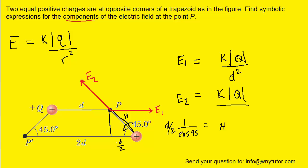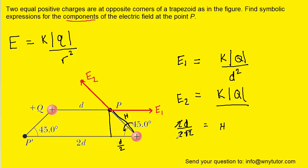The cosine of 45° is √2/2. Inverting gives 2/√2. Multiplying D/2 by 2/√2, the 2s cancel, giving us D/√2 as the distance from point P to the second charge. Plugging D/√2 into the E2 equation and squaring it gives D²/2 in the denominator, and that 2 moves up to the numerator: E2 = 2kQ/D².